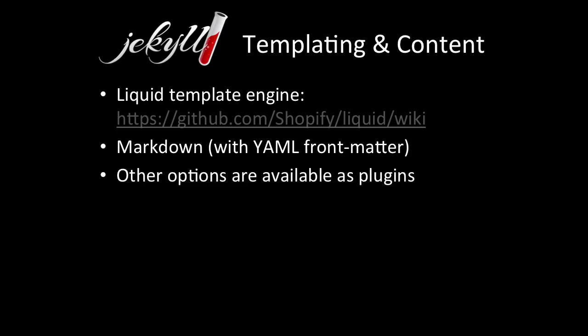For templating, Jekyll uses the Liquid template engine. Content is written in Markdown with what they call front matter in YAML. YAML is basically like JSON but with fewer curly braces. It does support other template engines and content formats, but those are all through plugins.